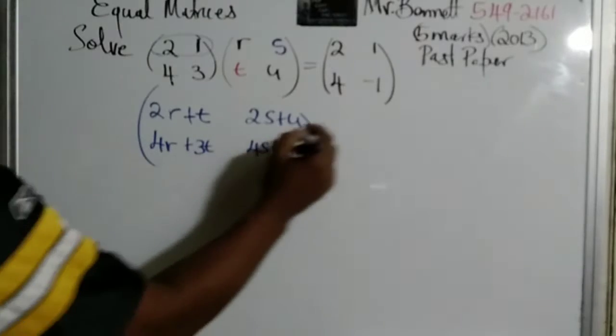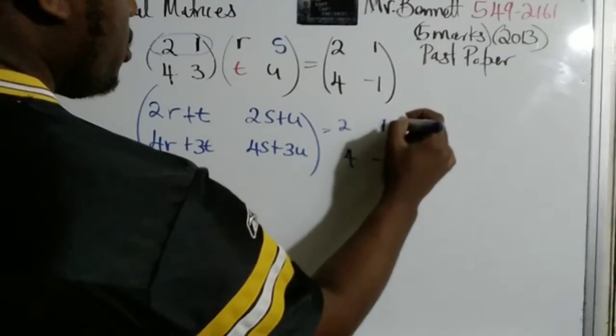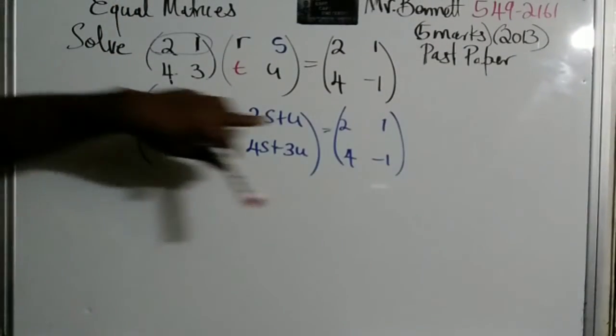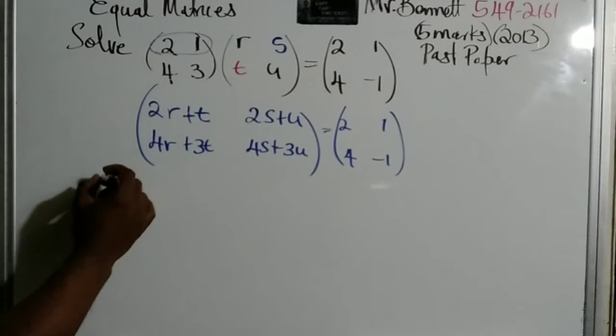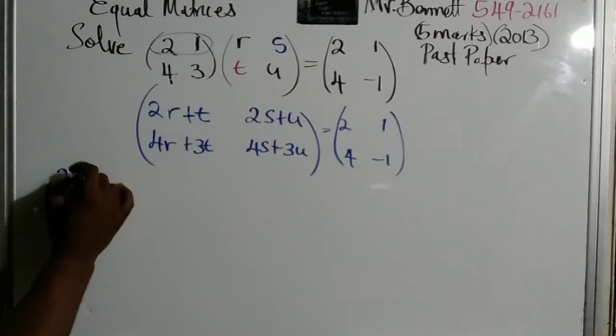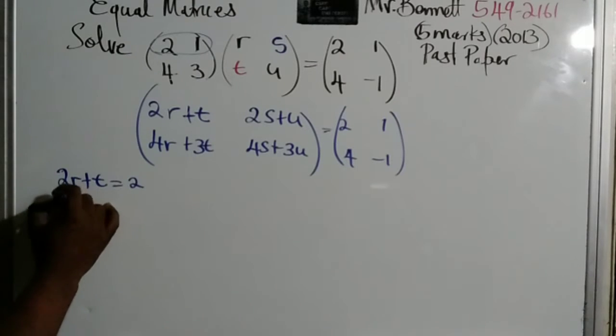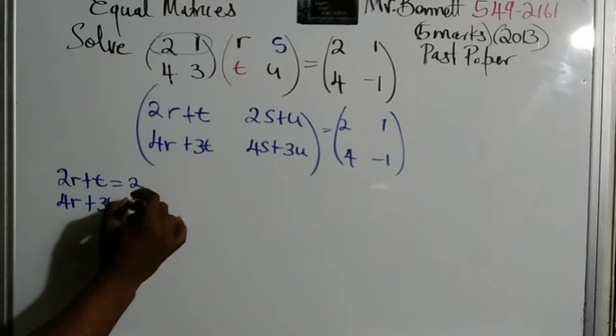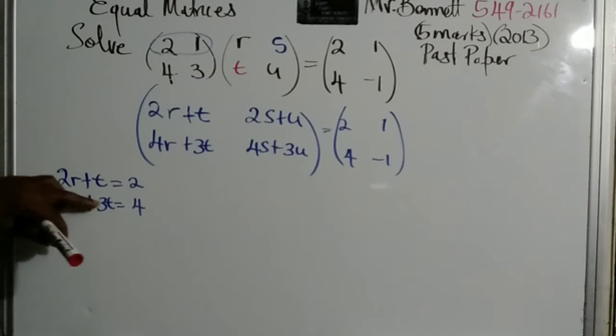Now we are supposed to equate this to the corresponding one. So it's 2, 1, 4, negative 1. So this must go to this, this must go to this. All right. So let's write it back. 2R plus T is equal to 2, and 4R plus 3T is equal to 4. As you can see guys, it's a simultaneous equation, right? Two unknowns.